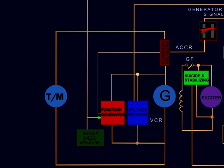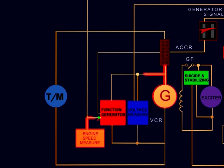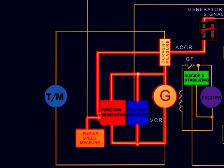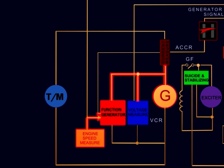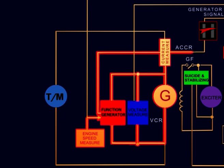The function generator provides a signal which modifies the output of the ACCR. With no signal from the function generator, the main generator demand would follow the circuit limit lines in each notch instead of breaking at the proper voltage to follow constant horsepower lines. A faulty function generator card is usually indicated by the engine not loading fully or by an overloaded engine.